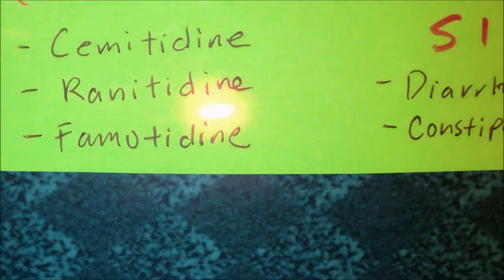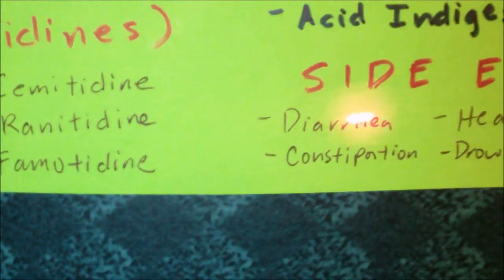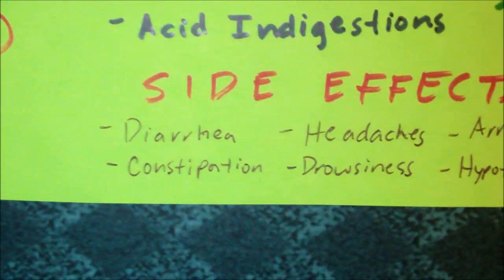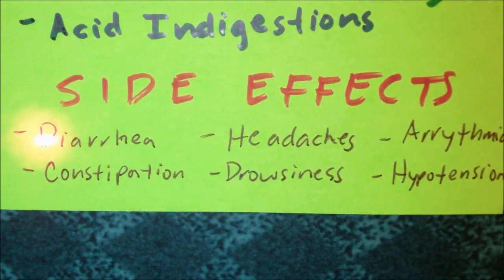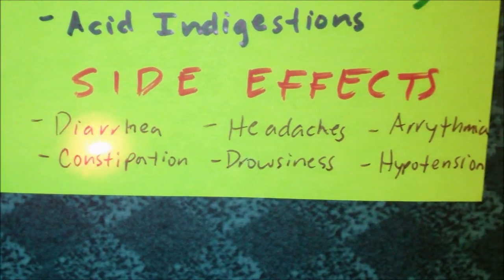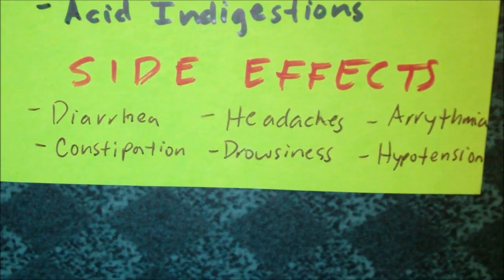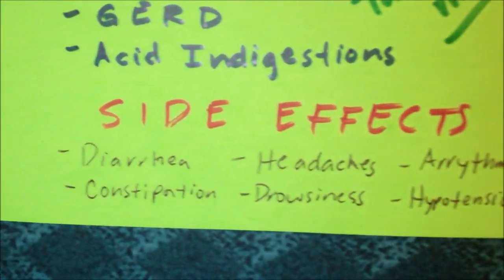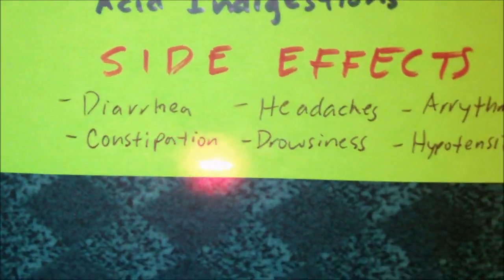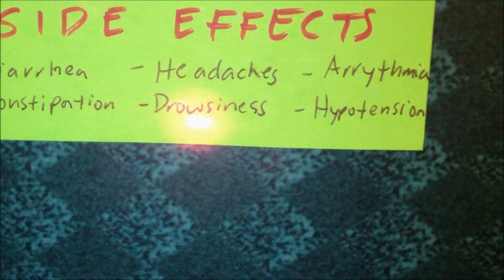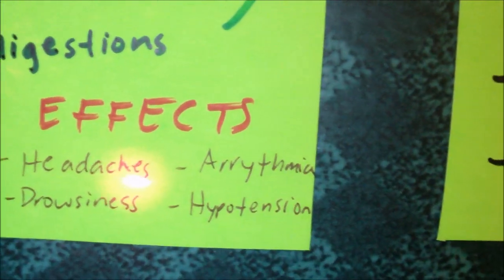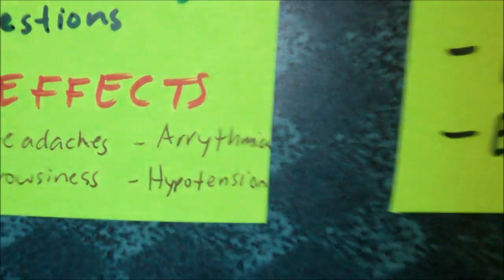So what are the side effects or adverse reactions that we need to watch out for with our patients taking H2 blockers? In regards to the gastrointestinal system, the patient can have diarrhea or constipation. The patient can also have headaches, drowsiness, and dizziness. The patient can be confused. The patient can also have arrhythmias and hypotension, so we need to monitor our patient's cardiovascular status.